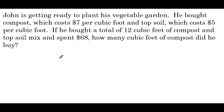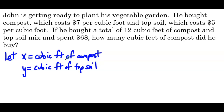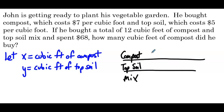John is getting ready to plant his vegetable garden. He bought compost, which costs $7 per cubic foot, and topsoil, which costs $5 per cubic foot. If he bought a total of 12 cubic feet of compost and topsoil mix and spent $68, how many cubic feet of compost did he buy? We'll let x be the cubic feet of compost and y be the cubic feet of topsoil. Again, a table would be a good choice. The rows are compost, topsoil, and mixture.